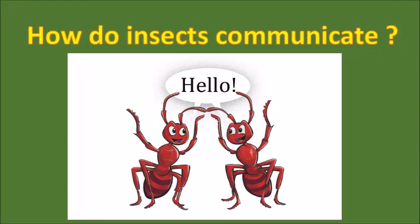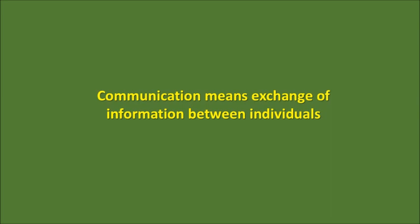Hello kids, today we are going to talk about how insects can communicate among themselves. So the first question is: what is communication? Communication means exchange of information between individuals. How does one person give information to another? We can either talk, wave our hands, or show that we are happy or sad by our facial expression. That's how we human beings communicate.